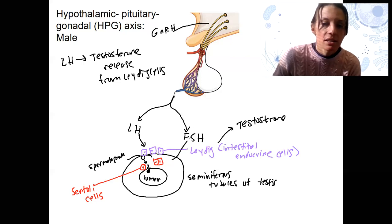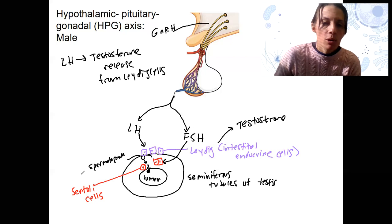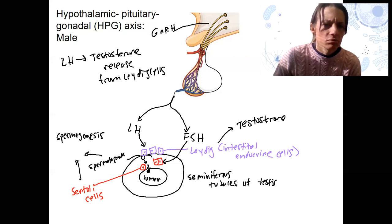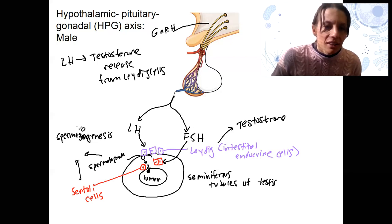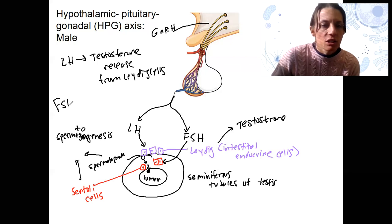So follicle stimulating hormone is going to stimulate the Sertoli cells, and it's going to stimulate spermatogenesis. FSH is going to stimulate the Sertoli cells and cause the spermatogonia to develop further, faster. So this is spermatogenesis. That's what's occurring in here. It's triggering that process. So FSH is going to stimulate spermatogenesis.